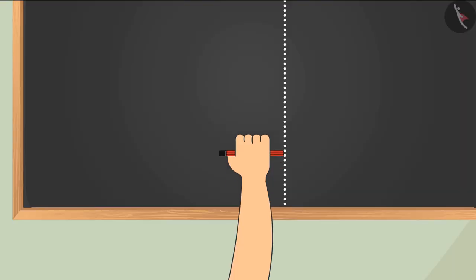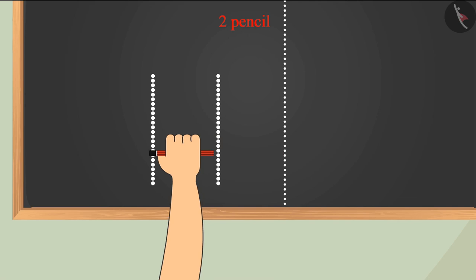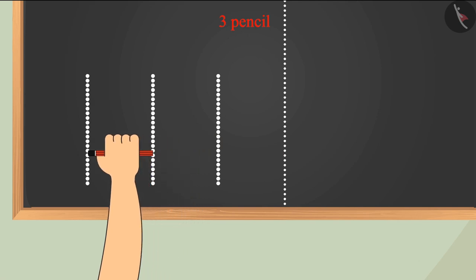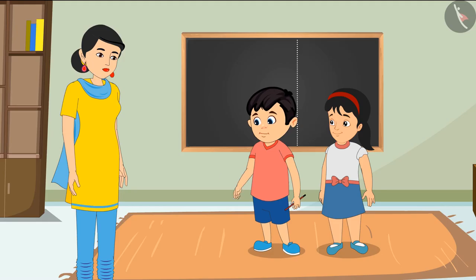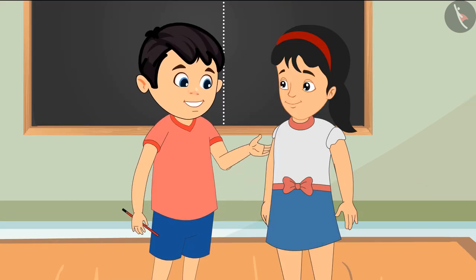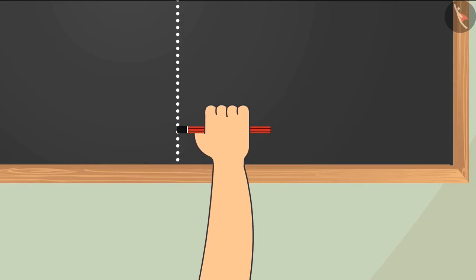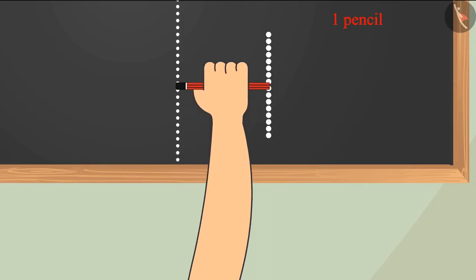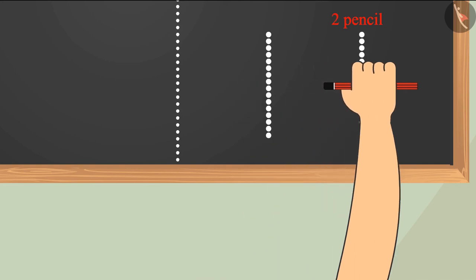Chotu measures again correctly: 'One pencil, two pencils, three pencils, four pencils. This means I have a total of four pencil-lengths of space.' 'Pinky, now it is your turn.' Pinky measures: 'One pencil, two pencils, three pencils — total three pencil-lengths of space.'